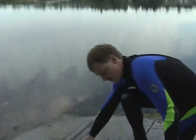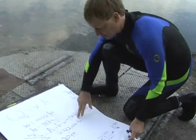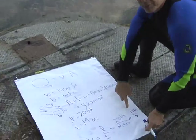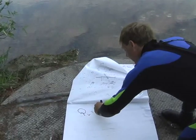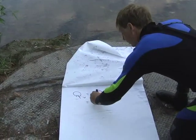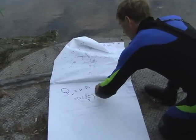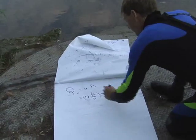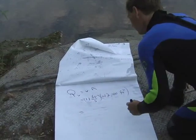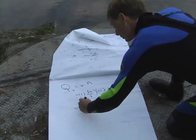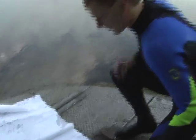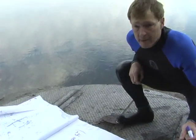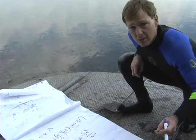So we've got an area of 42,000 square feet and a velocity of 1.1 feet per second. That means the volume flow rate is velocity times area, which is 1.1 feet per second times 42,000 square feet, giving us 462,000 cubic feet per second. Every second, 462,000 cubic feet are moving through there.